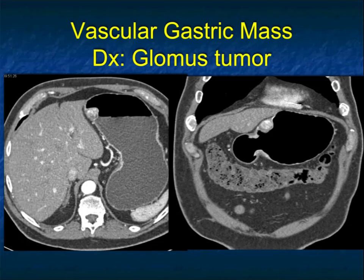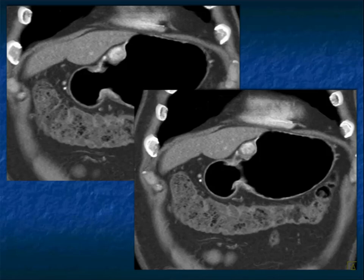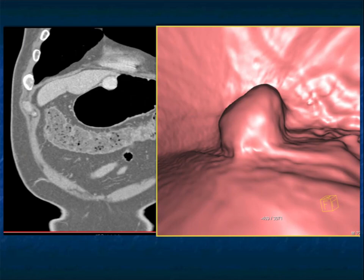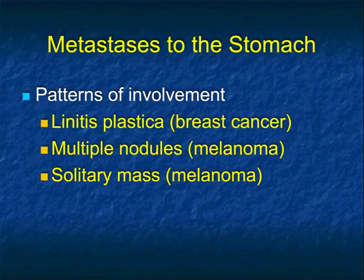There are other vascular tumors. Here's a vascular lesion in the stomach which could be a carcinoid tumor or metastatic renal cell — but this was a glomus tumor. Glomus tumors are rare but they're vascular, and here was a nice endoluminal view of that. Metastases to the stomach can present as polypoid lesions — that's uncommon — but metastases are very important.